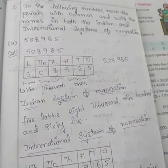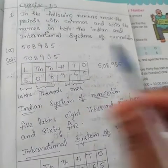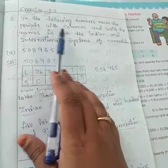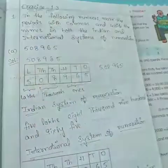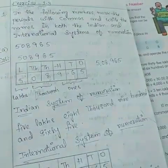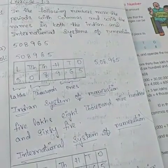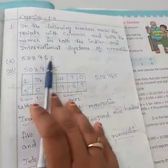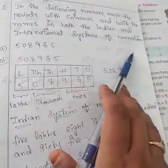In the last class, we discussed exercise 1.3, first bit. What is the first bit here? In the following numbers, mark the pairs with commas and write the names in both the Indian and international system of numeration.